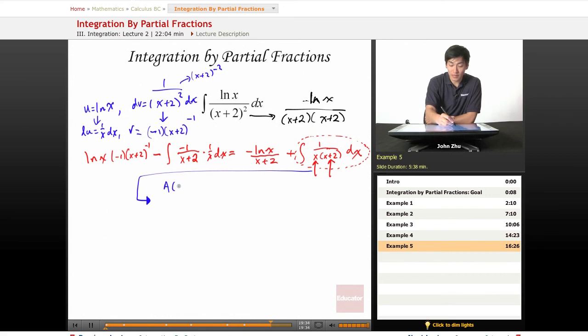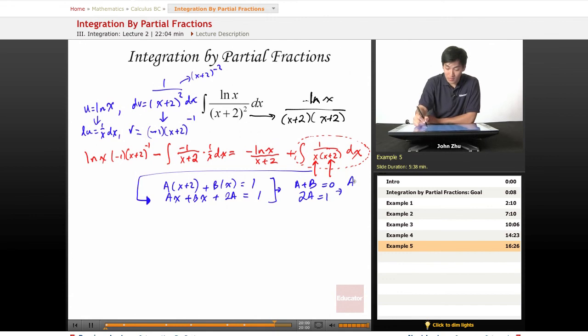So a times (x + 2) plus b times x equals 1. So then we have a times x plus b times x plus 2a, which equals 1. So we have here our a plus b is equal to 0 and 2a is equal to 1. Now we get something like a equals 1 half and b equals negative 1 half.